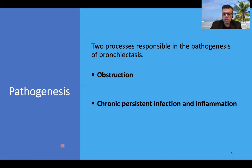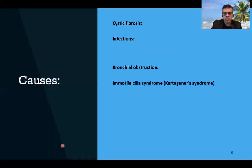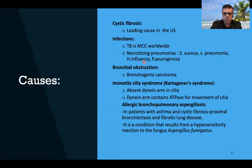The two processes responsible for the pathogenesis of bronchiectasis are: obstruction that predisposes to infection and inflammation, and chronic persistent infection and inflammation that weakens the airway wall, allowing significant dilatation. Common etiological factors include cystic fibrosis — one of the leading causes in the US — tuberculosis as the most common cause worldwide, and necrotizing pneumonias caused by Staph aureus, Streptococcus pneumoniae, Haemophilus influenzae, and Pseudomonas aeruginosa. Bronchial obstruction from bronchogenic carcinoma also leads to bronchial dilatation.